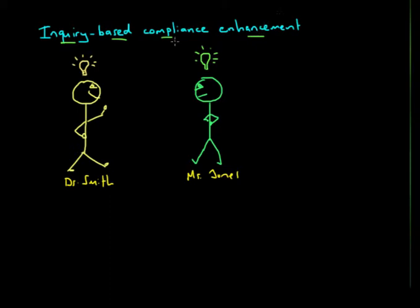So what we have here is two people: Dr. Smith and Mr. Jones. Dr. Smith has got this nagging suspicion that Mr. Jones is not taking his medication. Let's say he's on iron chelation therapy for his transfusion-related iron overload.